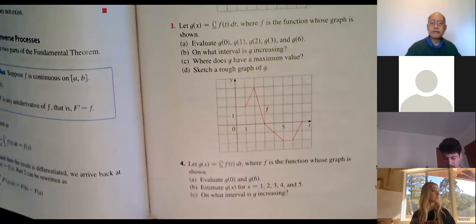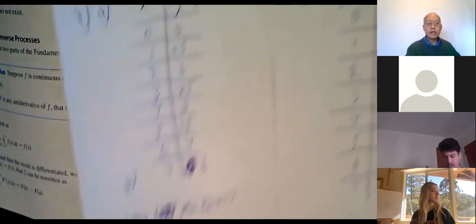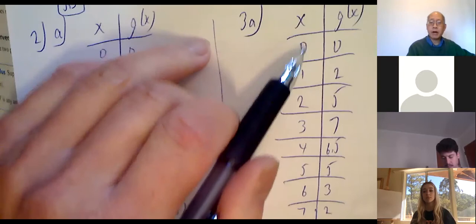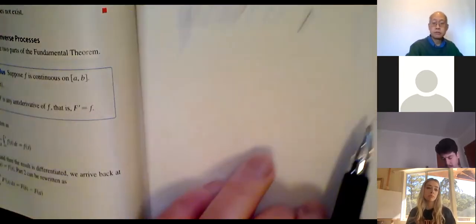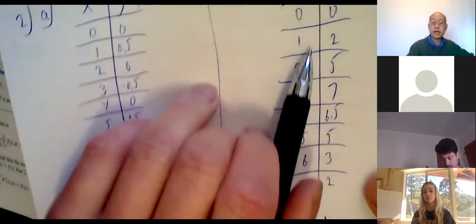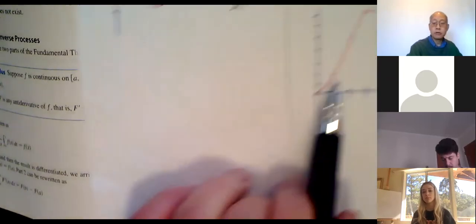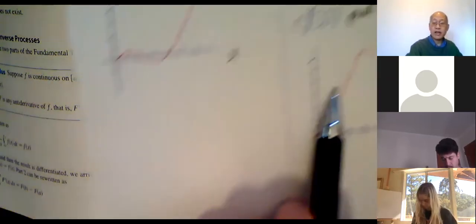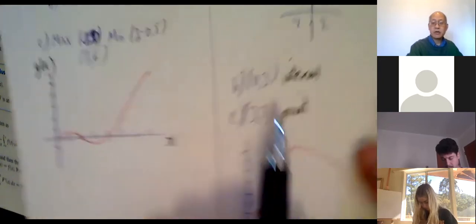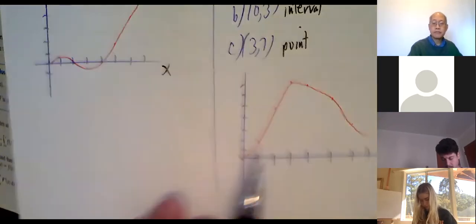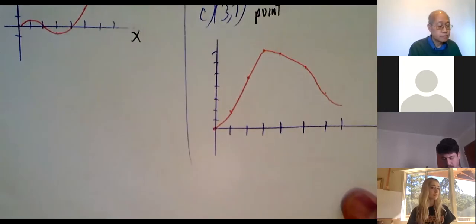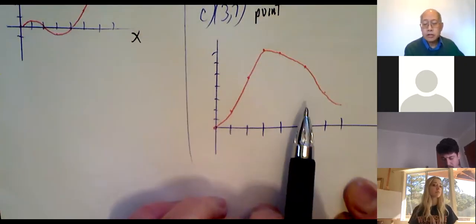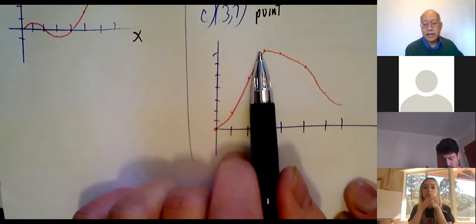Part d: sketch a rough graph of g. I just plotted all the points — (0,0), (1,2), (2,5), (3,7), (4,6.5), (5,5), (6,3), (7,2) — and there's the graph. If I plot this area function, you can clearly see the maximum at (3,7) and then it starts to go down.